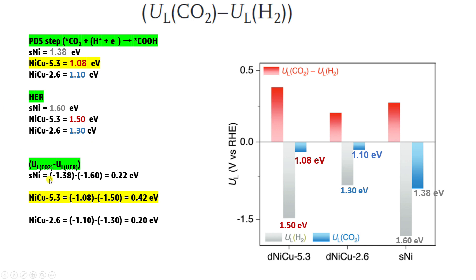We always put a negative sign in the limiting potential because we need to supply that energy to overcome the barrier. After subtracting we get the selectivity value. For NiCu 5.3: CO2RR limiting potential is 1.08 and HER is 1.50, so subtracting gives −0.42 eV. For NiCu 2.6: CO2RR is 1.10 and HER is 1.30, subtracting gives 0.20 eV.